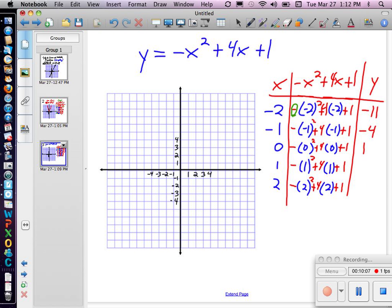And then we have negative 1, plus 4. That's 3. Plus 1 is 4. And then we have negative 4, plus 8. That's 4, plus 1 is 5. Alright. So we have something like that.